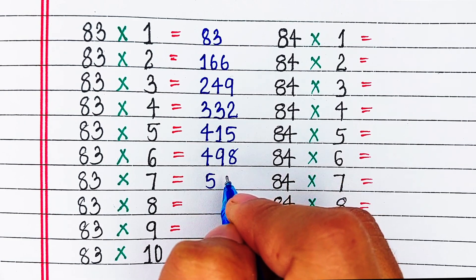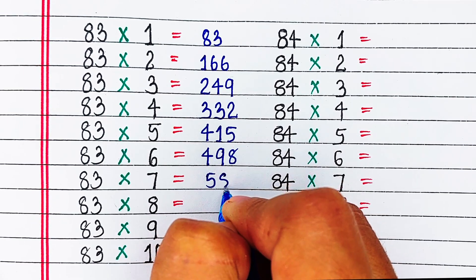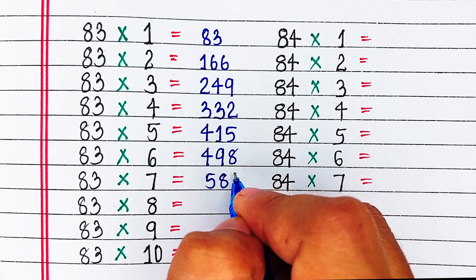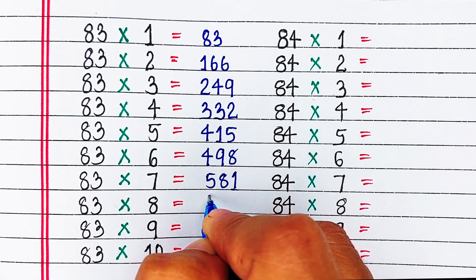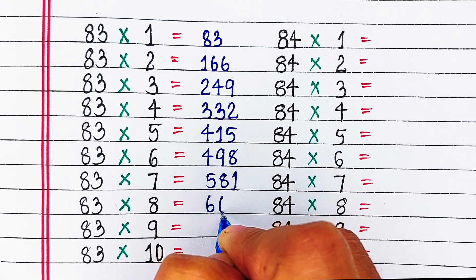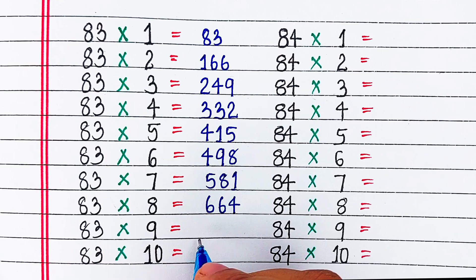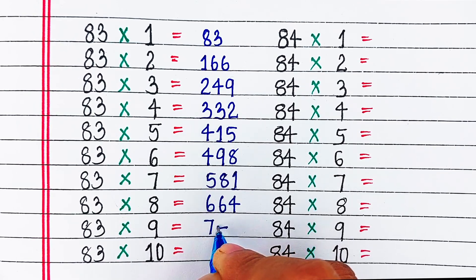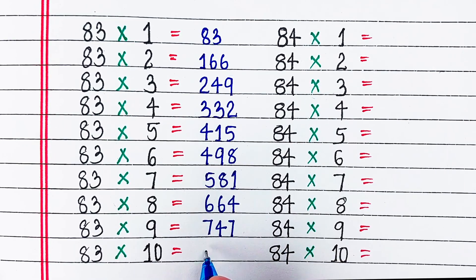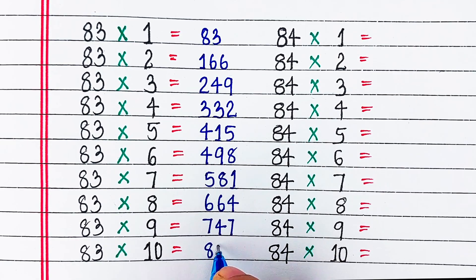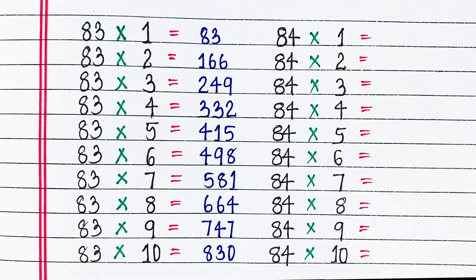83 6s are 498, 83 7s are 581, 83 8s are 664, 83 9s are 747, 83 10s are 830.